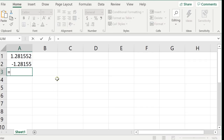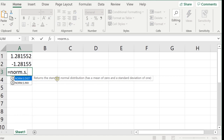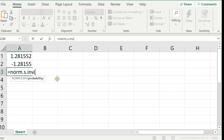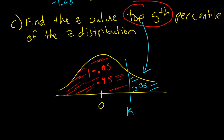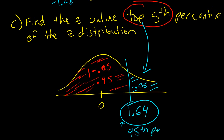Let me go to Excel and type =NORM.S.INV(0.95). The answer is 1.64. So this value of K is 1.64 — the top 5th percentile of the z distribution is 1.64. And actually, the top 5th percentile is exactly the same thing as the 95th percentile.